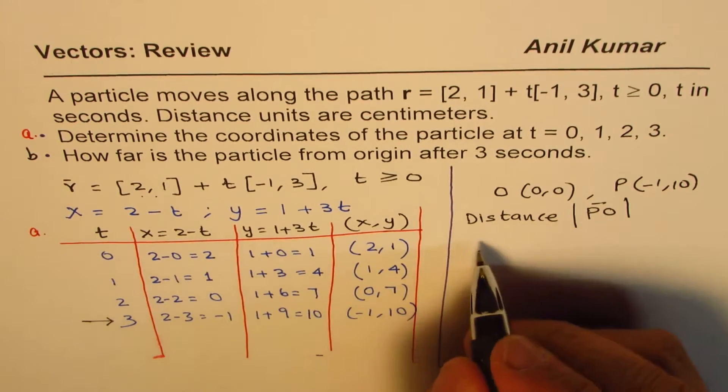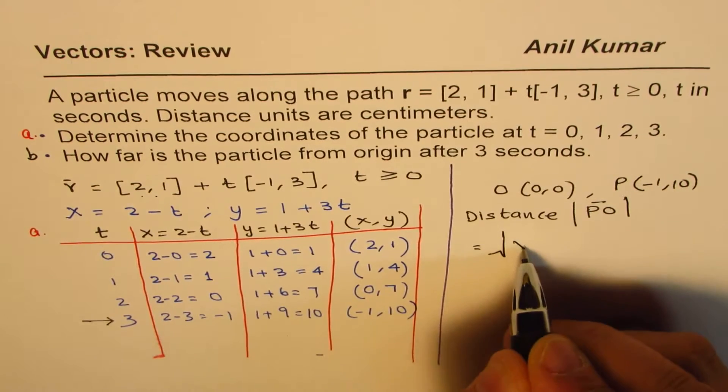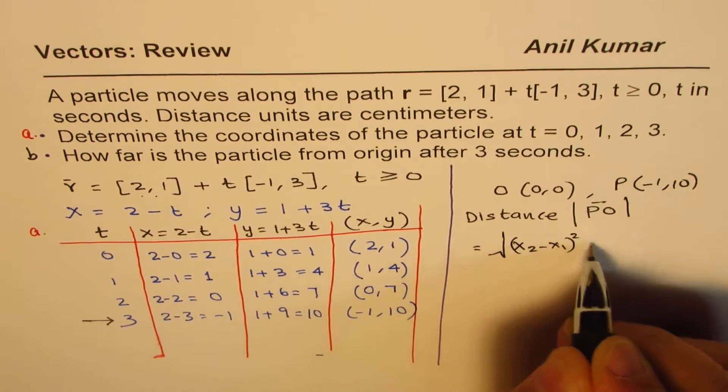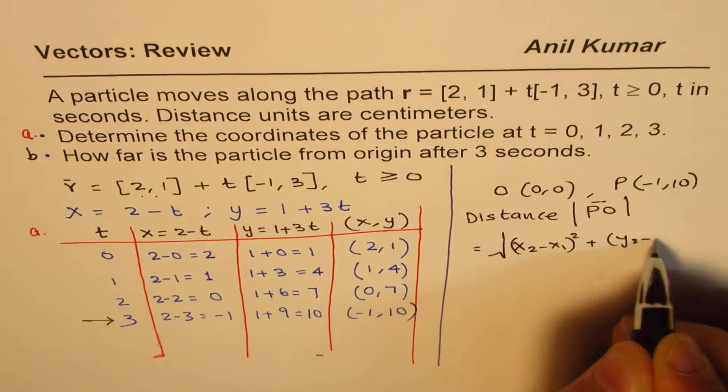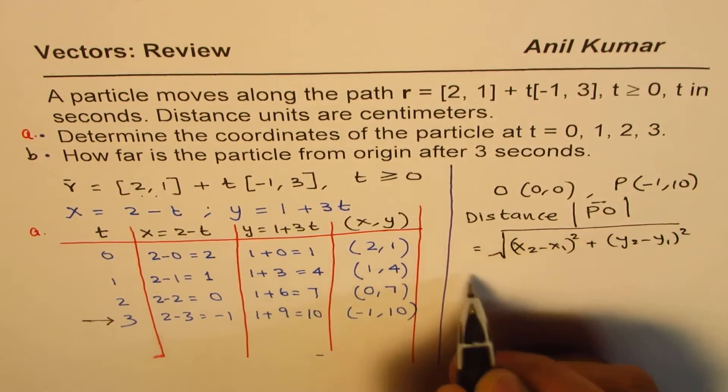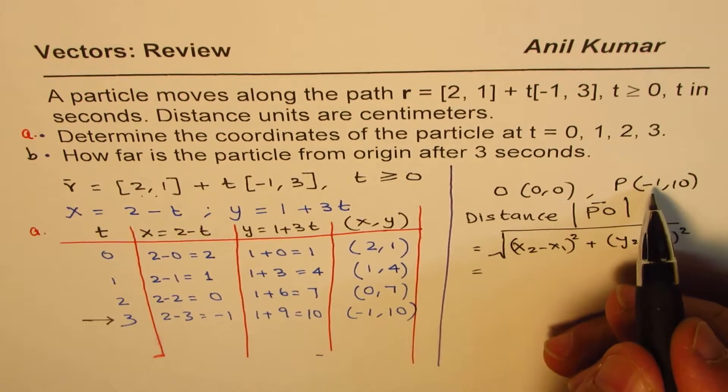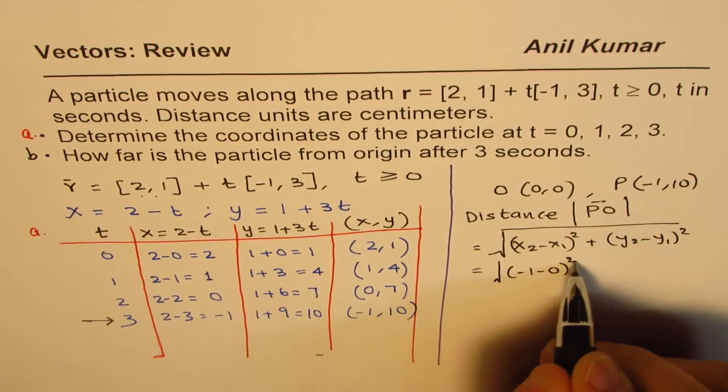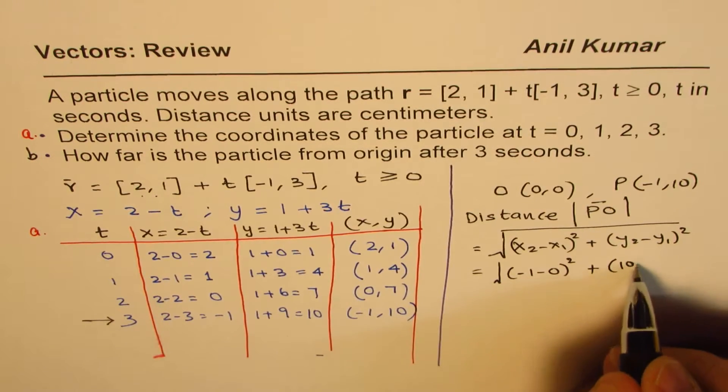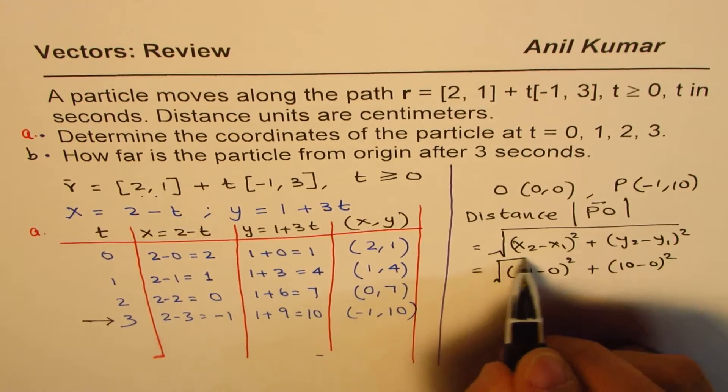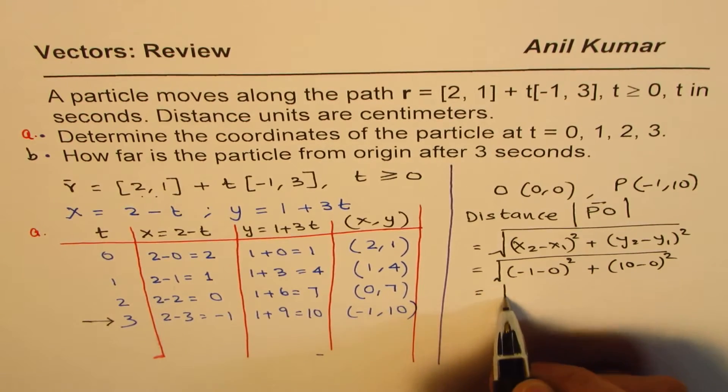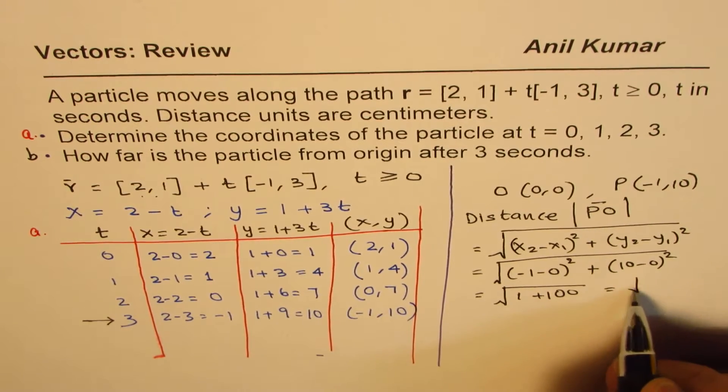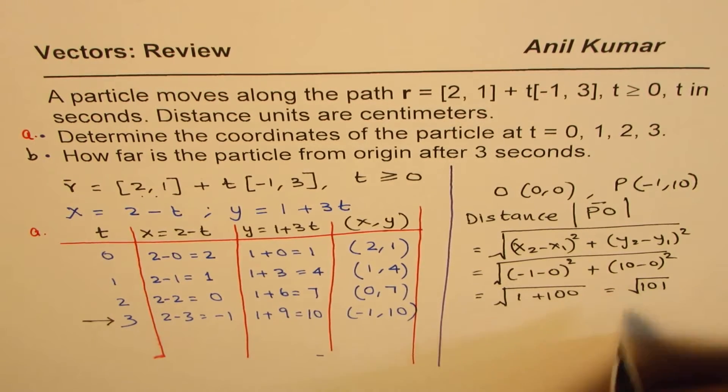So that we can find as square root of, we'll apply the formula (x2 minus x1) whole square plus (y2 minus y1) whole square. So in this case, it is square root of (-1 minus 0) whole square plus (10 minus 0) whole square. And that is square root of 1 plus 100. So that is square root of 101.